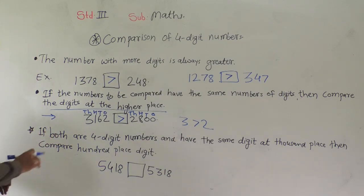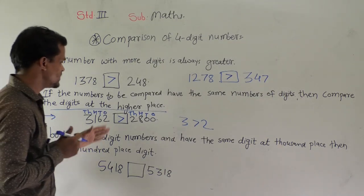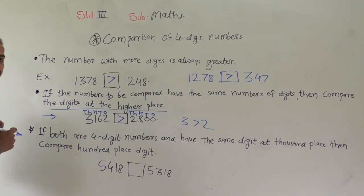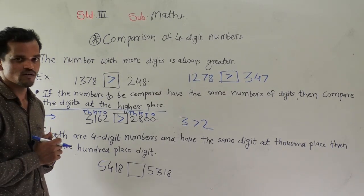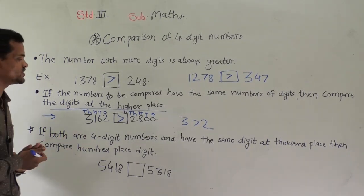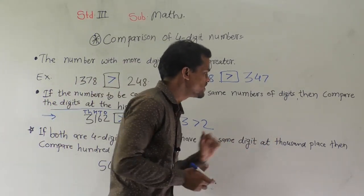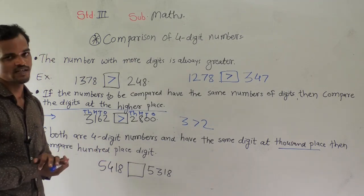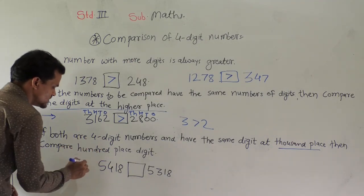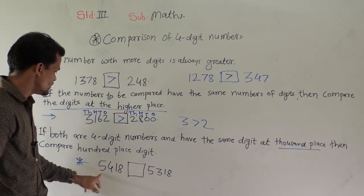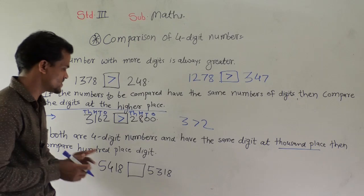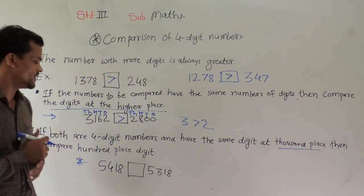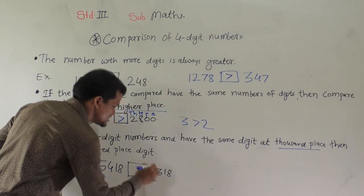If both 4-digit numbers have the same digit at the thousands place, then compare the hundreds digit. If both are 4-digit numbers and have the same digit at the thousands place, then compare the hundreds digit. We will see this example: 5418 and the next number is 5318. We can observe here the thousands digit is the same.